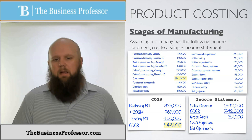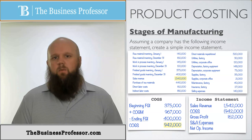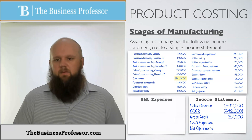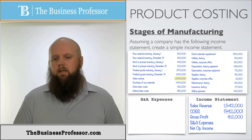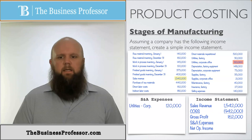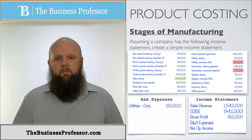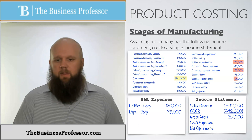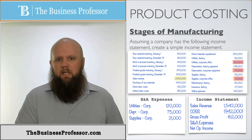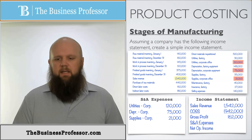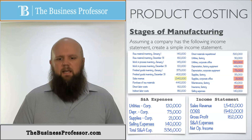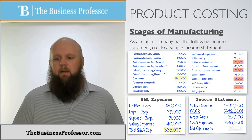S&A expenses aren't given outright, but we can calculate them similarly to manufacturing overhead. Utilities for the corporate office: $120,000. Depreciation for corporate equipment: $75,000. Supplies for corporate office: $21,000. And selling expenses: $140,000. That gives a total S&A expense of $336,000. Moving that to our income statement gives us a net operating income of $120,000. And that's how you do the three stages of product cost flow.